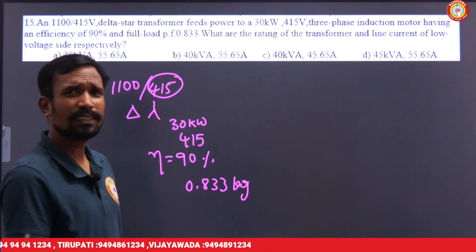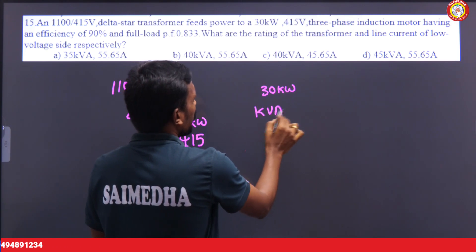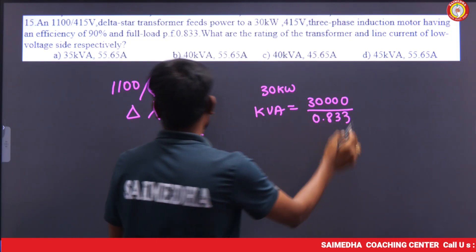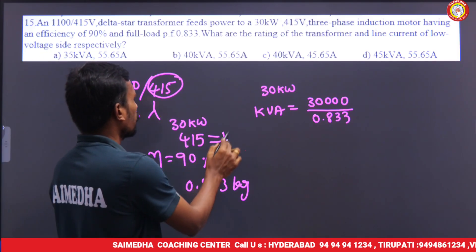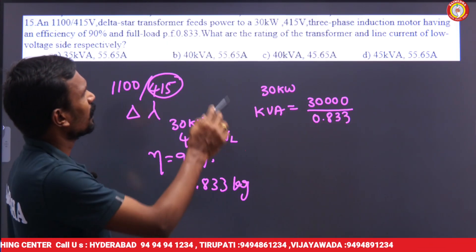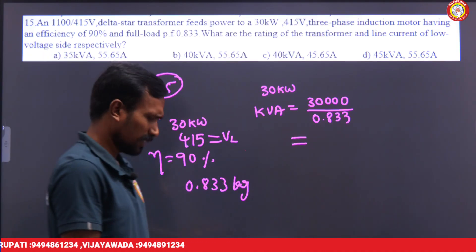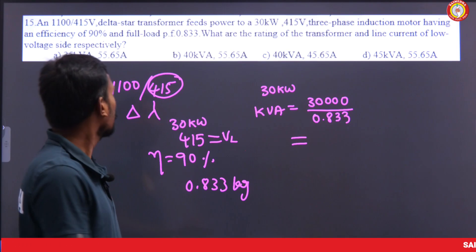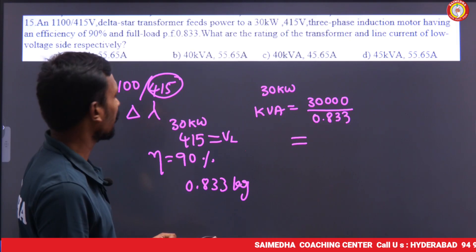The power here is 30 kilowatts. The KVA rating equals 30 kilowatts divided by power factor 0.833, and the line voltage is 415 volts. So 30,000 divided by 0.833 gives almost 36 KVA initially — but we haven't accounted for efficiency yet.